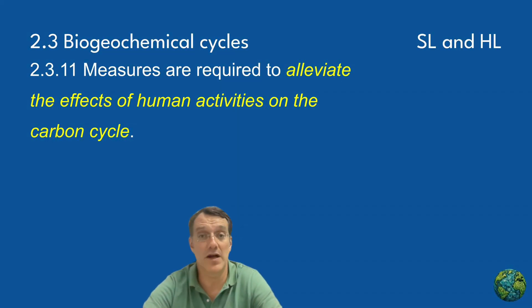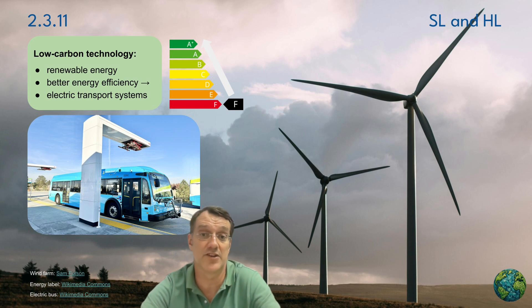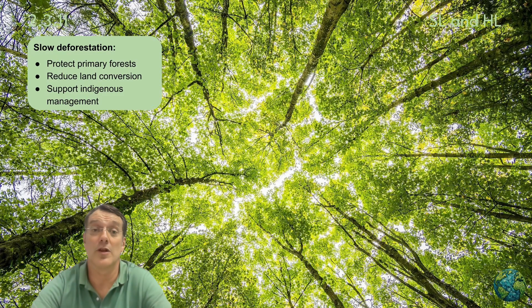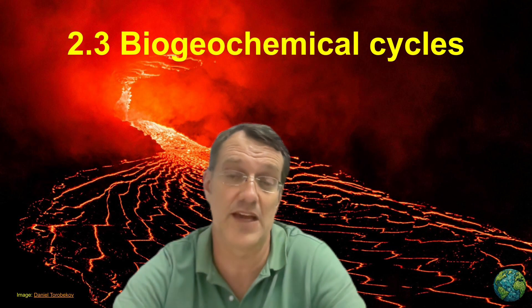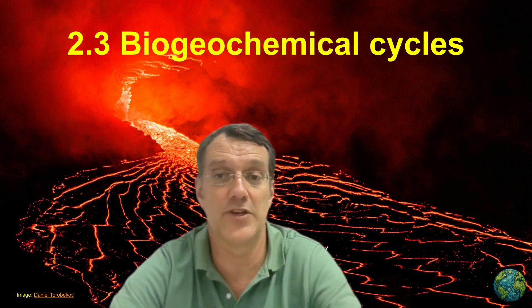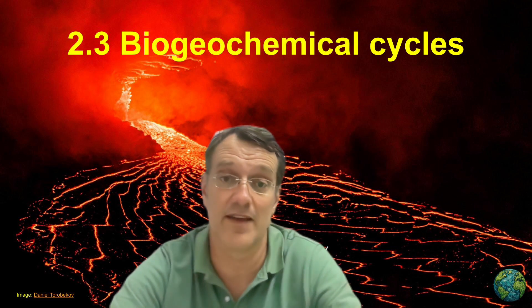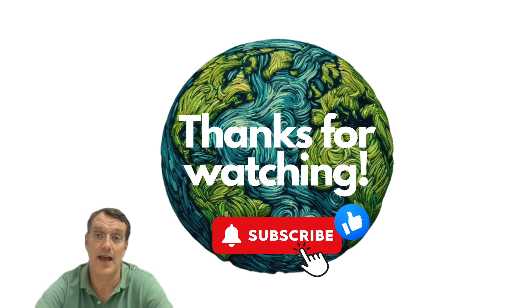Given these impacts, we must take action to address human effects on the carbon cycle. This includes transitioning to low-carbon technologies like renewable energy and electric transport, reducing fossil fuel use through improved standards and limited extraction, protecting soil structure, slowing deforestation, and actively increasing carbon capture through reforestation and wetland restoration. These solutions require coordinated effort at all scales, from individual actions to international cooperation. By understanding how these biogeochemical cycles work and how we impact them, we can work towards more sustainable management of Earth's carbon systems. That's it for Standard Level Topic 2.3 — I hope you found this video helpful, and until next time, happy learning!